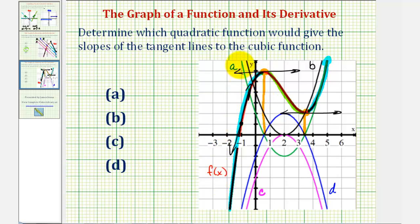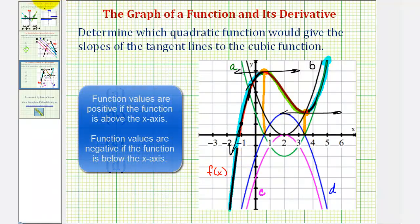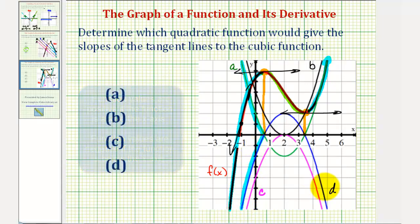So if we take a look at quadratic function a and quadratic function d on the same interval, notice quadratic a does have positive function values on this interval, but quadratic d has negative function values. Which means quadratic d would not be the quadratic function that gives these slopes of the tangent lines of our function.